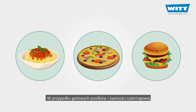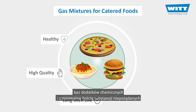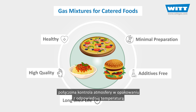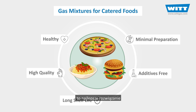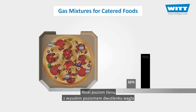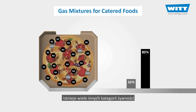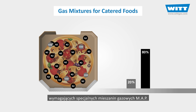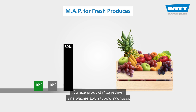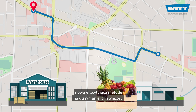With ready meals and catered foods, customers expect healthiness and high quality with long shelf life, without chemical additives and with minimal preparation. In order to meet these demands, atmosphere control combined with the correct temperature is the best solution. Low oxygen level with a high level of carbon dioxide will promote such product shelf life. Fresh produces are one of the most important food categories, and we'll show you in another video a new exciting method for keeping them fresh during transport.